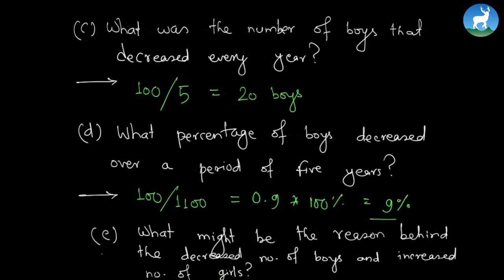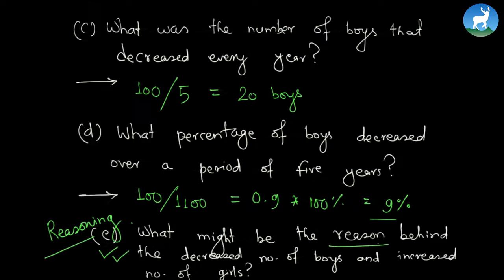The last question is: what might be the reasons behind the decreased number of boys and increased number of girls? Now this is a logical question. You can give any kind of inference or reasoning. I'm not going to give you the exact reason because there's no such thing as an exact reason. This is a question related to reasoning and you need to use your own mind and a bit of creativity to give the answer.